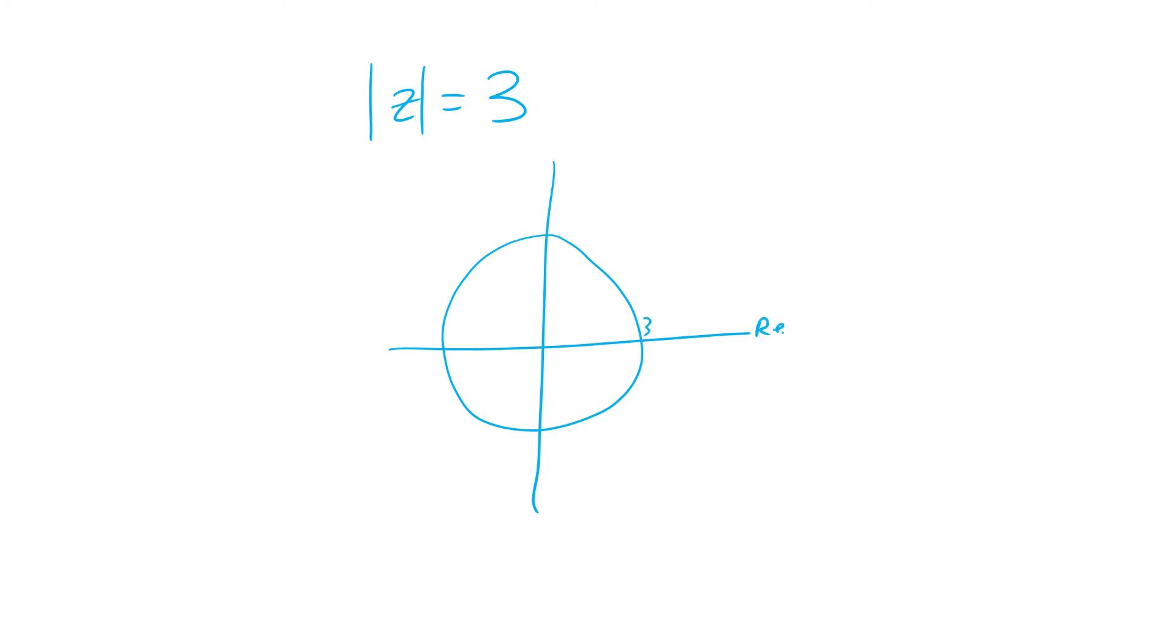So every point on this circle z is going to be 3 away from the origin. So that satisfies the relation.